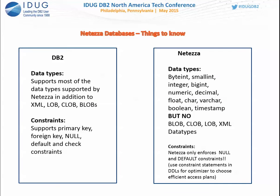What data types does Netezza support? DB2 is exhaustive and supports most data types plus large objects like XMLs, LOBs, and CLOBs. Netezza only supports integers, numeric, decimal, float, Boolean, and timestamp — no large object types. This is because it's an analytic appliance built for a specific purpose; analytics typically don't require large object storage. For constraints, DB2 supports primary keys, void, null, default, and check constraints. Netezza only enforces null and default constraints — no primary keys or foreign keys are enforced, though they can be declared in DDL for optimizer use.